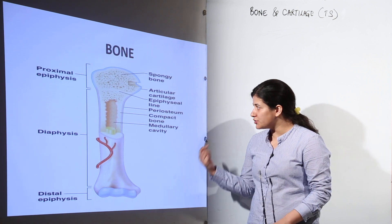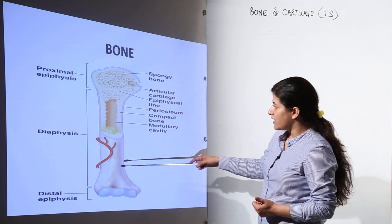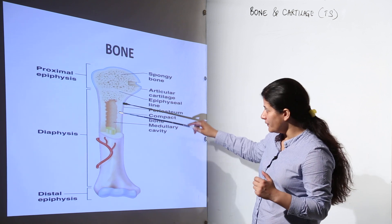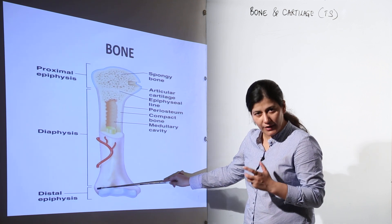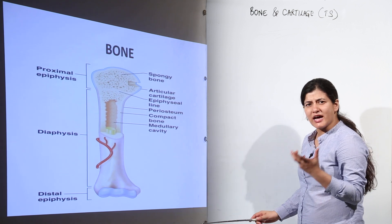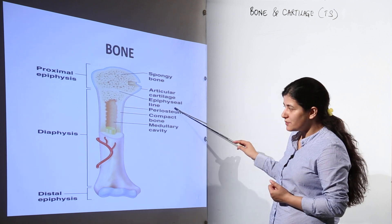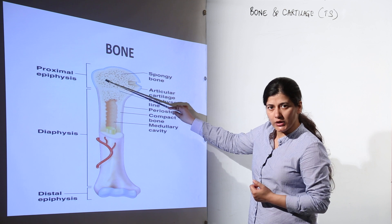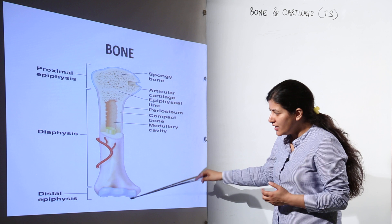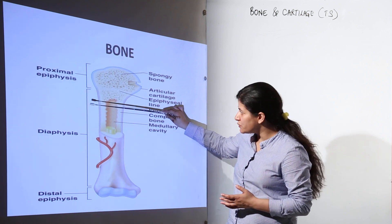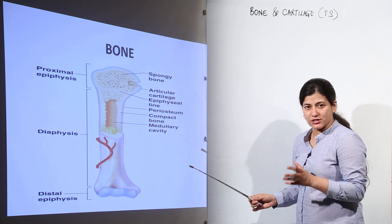First of all, you can see this is a bone. There is a diaphysis, which is the central part of the bone. At both ends of the diaphysis there is an epiphyseal plate, which is nothing but hyaline cartilage present at the end of the bones. There is also an epiphyseal line, and over that we have the spongy bone. An articular cartilage surrounds the end of the bone, and there is a distal epiphysis and proximal epiphysis, both separated from the diaphysis by the epiphyseal line.